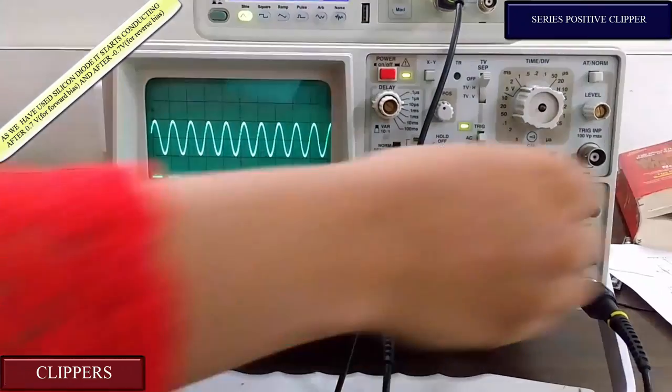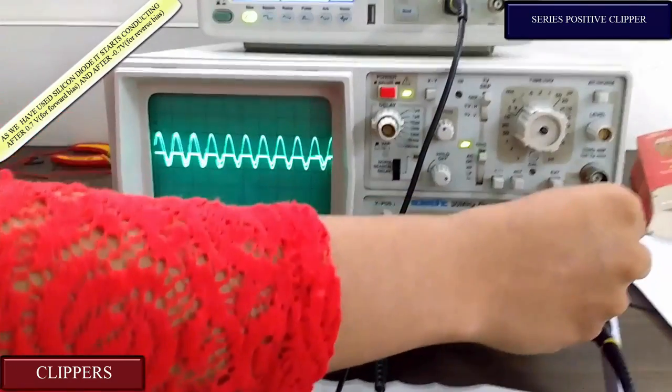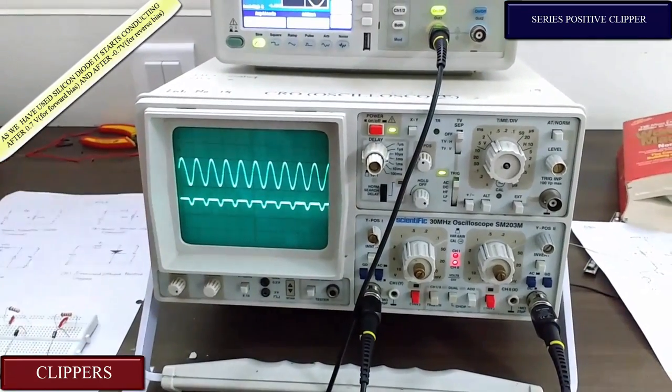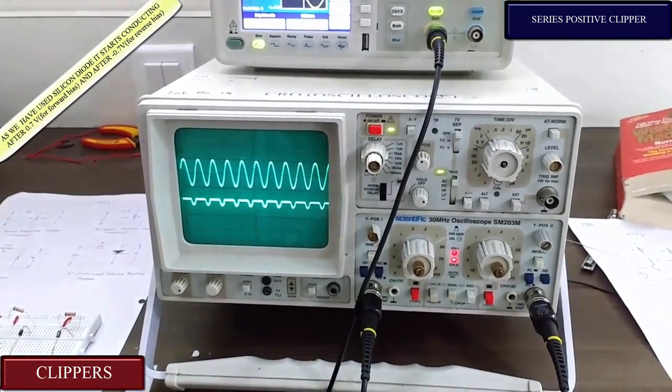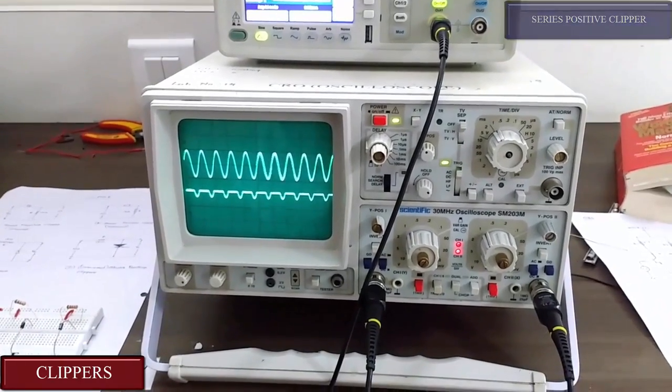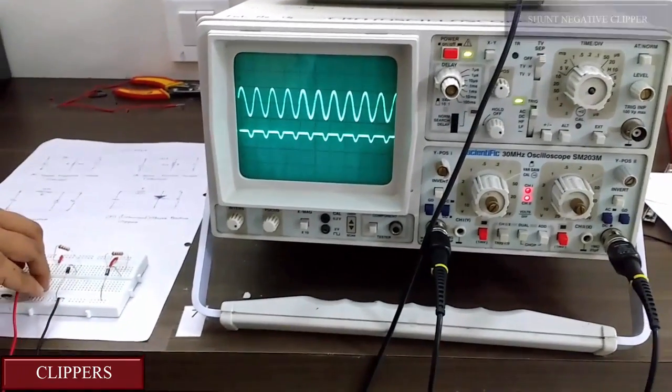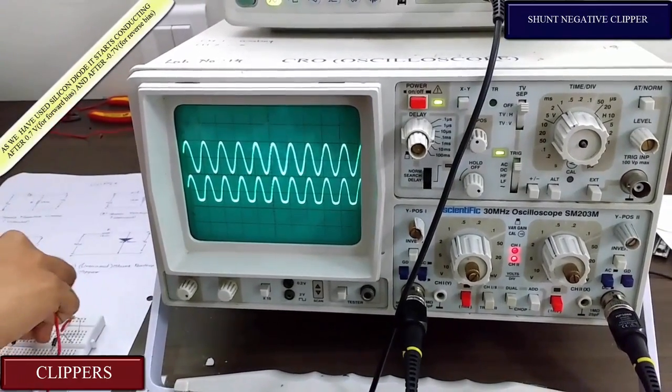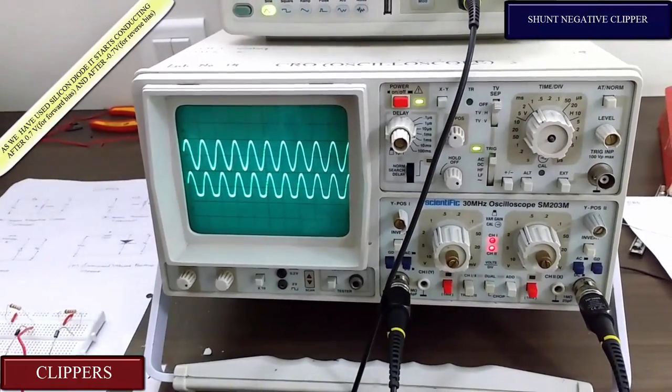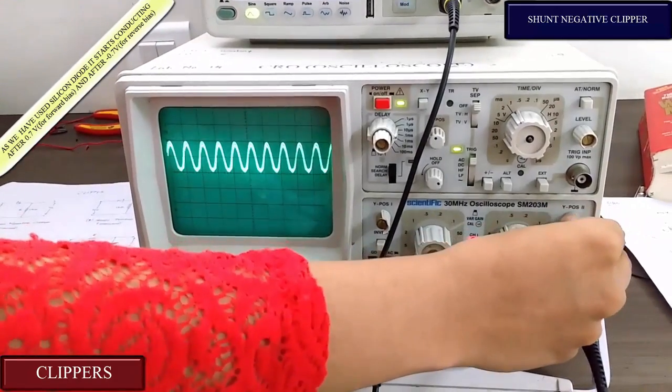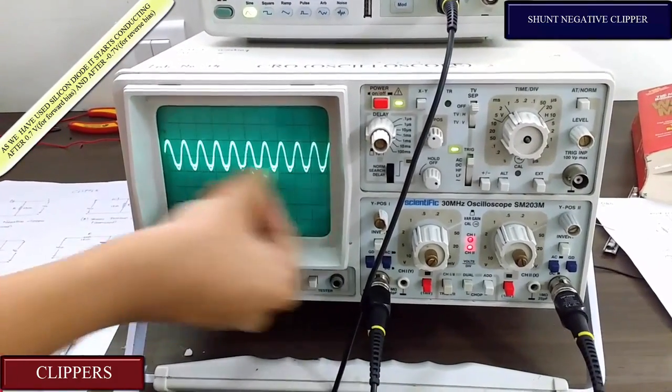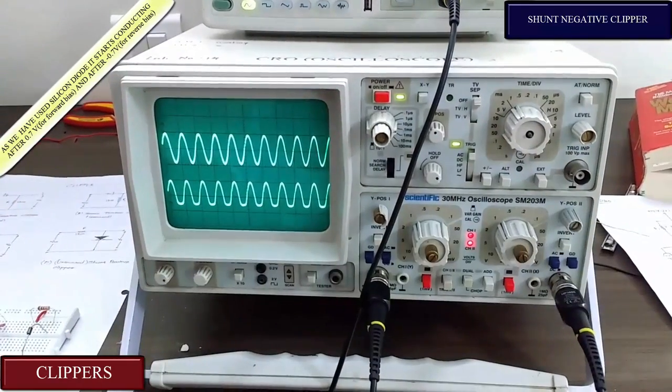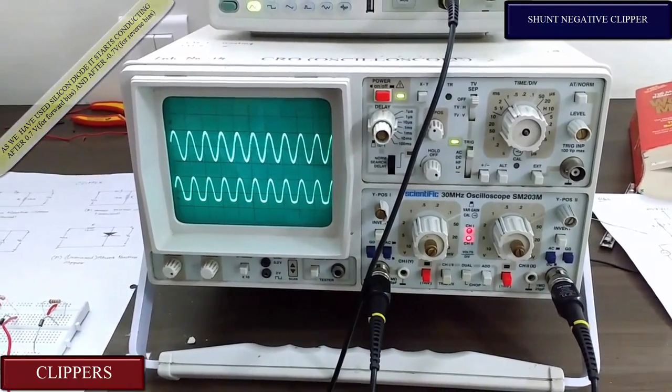Now let's see what happens in shunt negative clipper. Now I am moving this up. As you can see some part of the negative signal is clipped. This is shunt negative clipper.